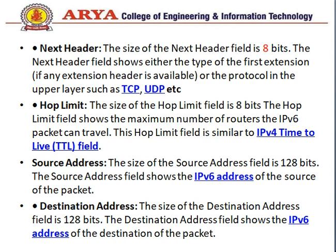Next is the next header field, which is 8 bits and defines the type of upper-layer protocol being used, such as TCP, UDP, and other protocols. Next is hop limit, which is similar to Time to Live in IPv4 and is 8 bits. Then source address, which is 128 bits and defines the sender's address, and destination address, which is also 128 bits and holds the receiver's address.